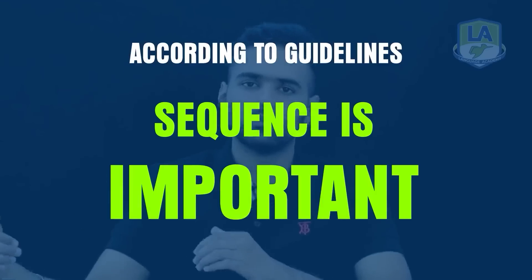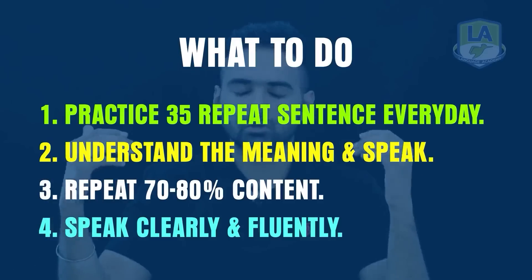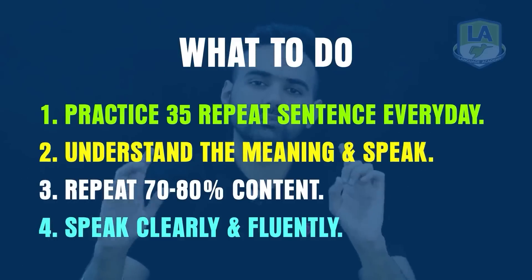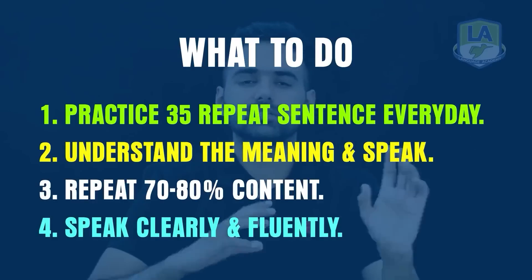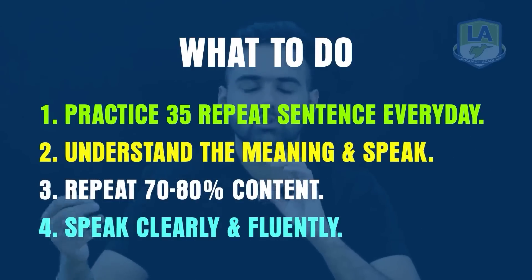अब करना कैसे है — दो techniques हैं। एक है initial strategy जो मैं ज्यादा recommend नहीं करूंगा, क्योंकि बच्चे काफी struggle करते हैं। Initial strategy में जैसे sentence है 'I am going to London' — notebook में लिखो I A G T L यानी हर word का पहला letter। But बहुत बच्चों की typing speed इतनी तेज नहीं होती, initials याद नहीं रहते। मैं suggest करूंगा — आंखें बंद करो, sentence का मतलब समझो। अगर मतलब समझोगे, ज्यादा content retain कर पाऊगे।